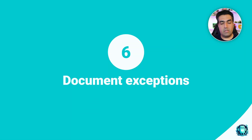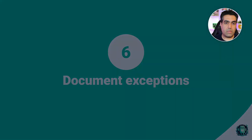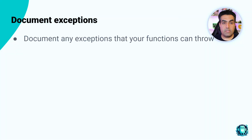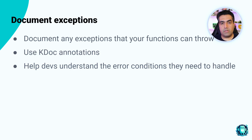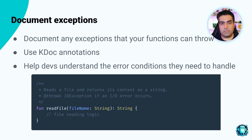Number six: document exceptions. As mentioned in the basics section, unlike Java, Kotlin doesn't have checked exceptions. A good practice is documenting any exceptions that your functions can throw, using KDoc annotations, to help other developers understand the error conditions they need to handle. Here is an example of how @throws looks in KDoc.